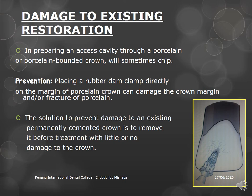Damage to existing restorations is another mishap during access preparation. When a porcelain crown is present and root canal treatment is needed, it is always better to remove the crown first before preparing the access cavity. Placing a rubber dam clamp directly on the margin of a porcelain crown can damage the margin and cause fracture of the porcelain.